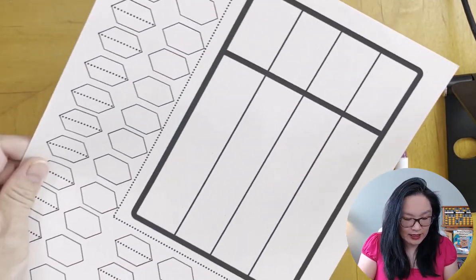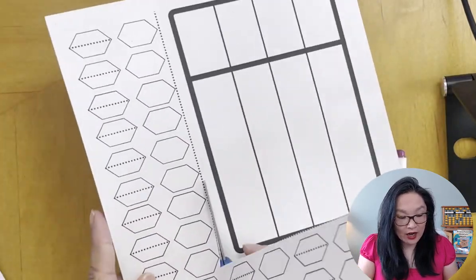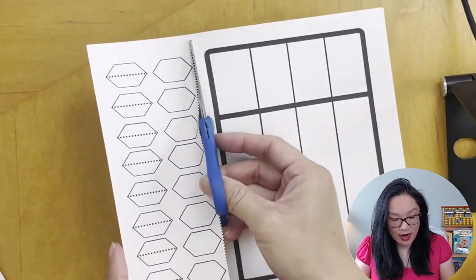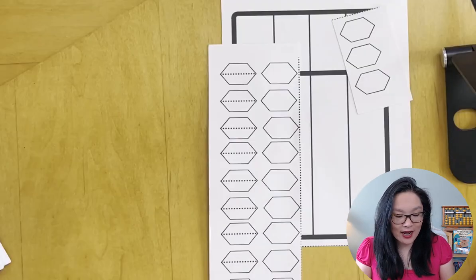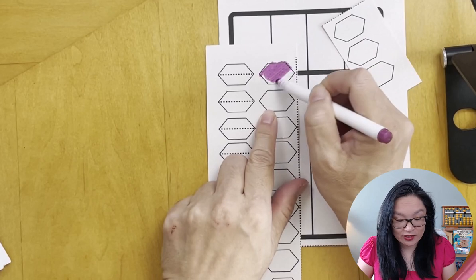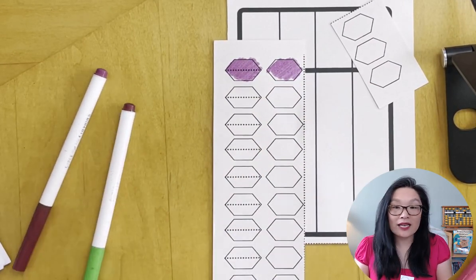I will cut, I'm just cutting along the lines. So now what you want to do is, I made them this shape - one, two, three, four, five, six - a hexagon. I made it a hexagon shape so it's easier to cut.